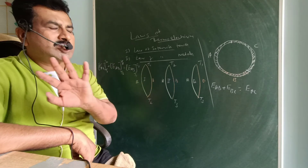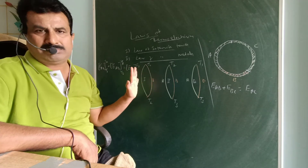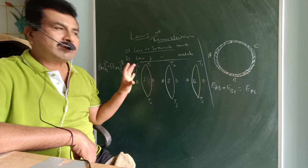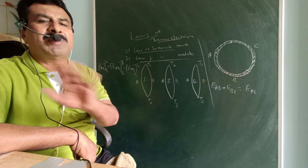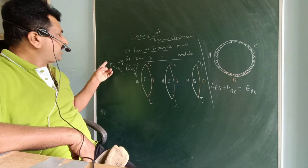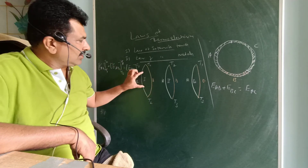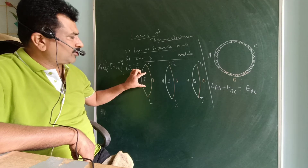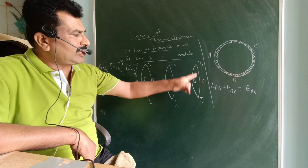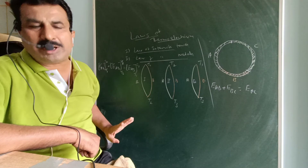When the extra intermediate temperature T2 is inserted, there is no change in the thermo EMF. This is the law of intermediate temperature.